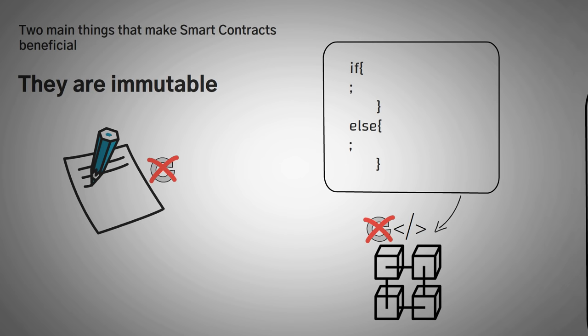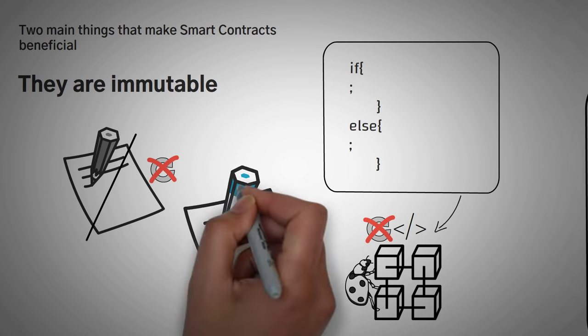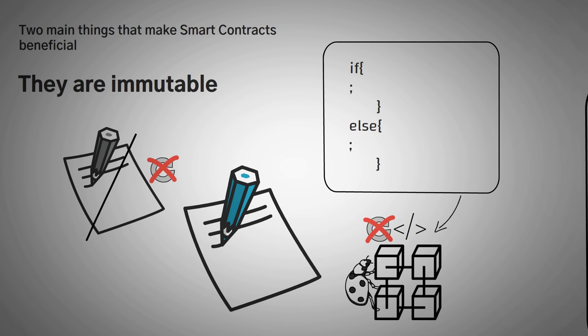Now, the downside of this, you might be thinking, is that if there is a bug, or the code is inefficient, it will be a bug, and it will be inefficient forever. However, if you wanted to, you could just create a new smart contract and tell people not to use the old one. In fact, this happens very often.